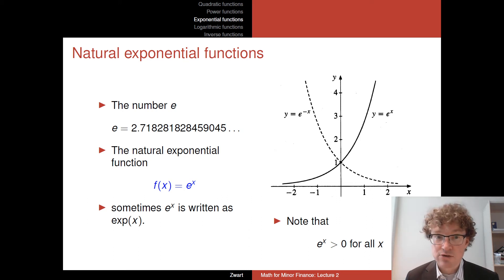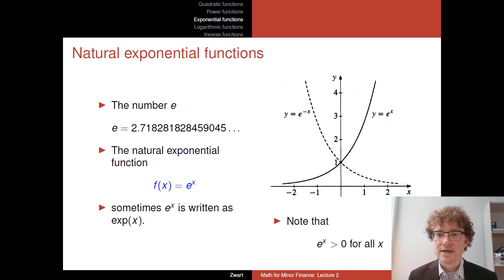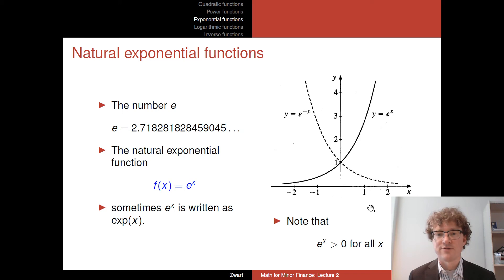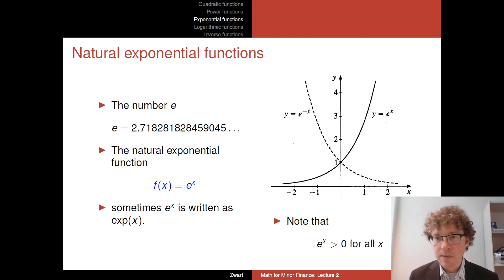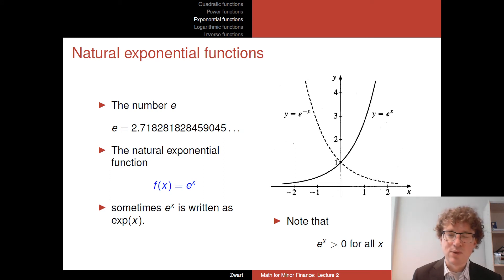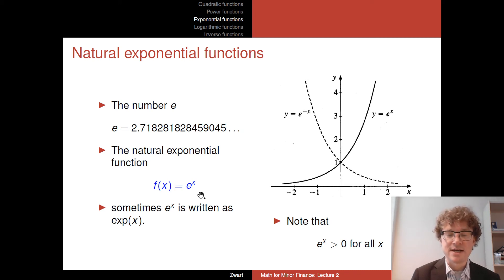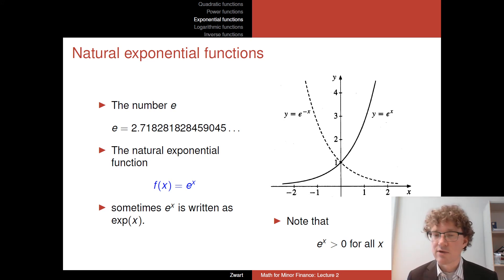Why this number? What's natural about the natural exponential function? What makes it interesting is that the rate of growth is exactly equal to the height of the function — there's a direct relation between how large the function is and how fast it grows. This is called the natural exponential function. In mathematics and economics, we prefer to use e as the base because it makes computations much easier, as we'll see when we do differentiation.